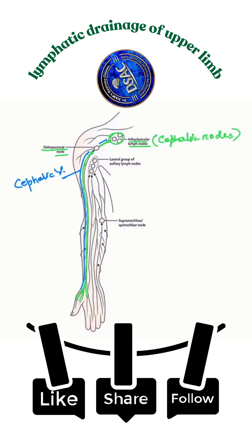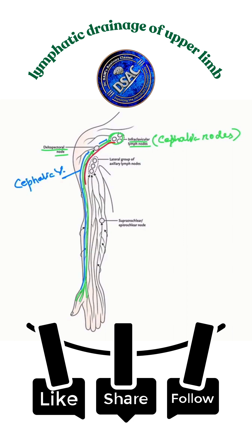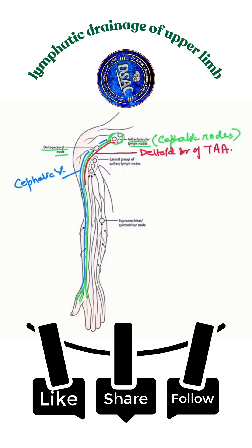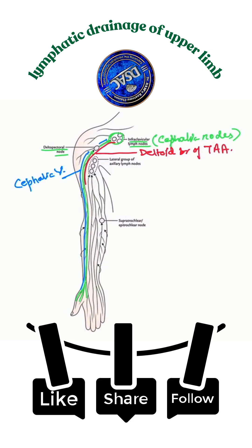In the same deltopectoral groove, there is an artery — the deltoid branch of the thoracoacromial artery. Remember the three contents present in the deltopectoral groove: the cephalic vein, the lymphatics from the thumb and its web along the lateral border of the forearm, and the deltoid branch of the thoracoacromial artery.